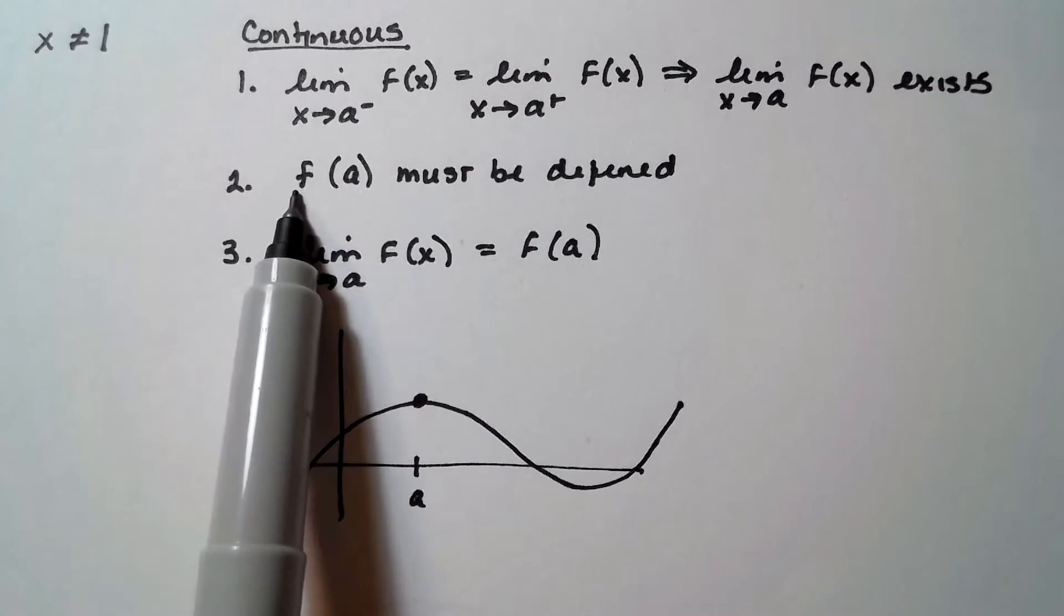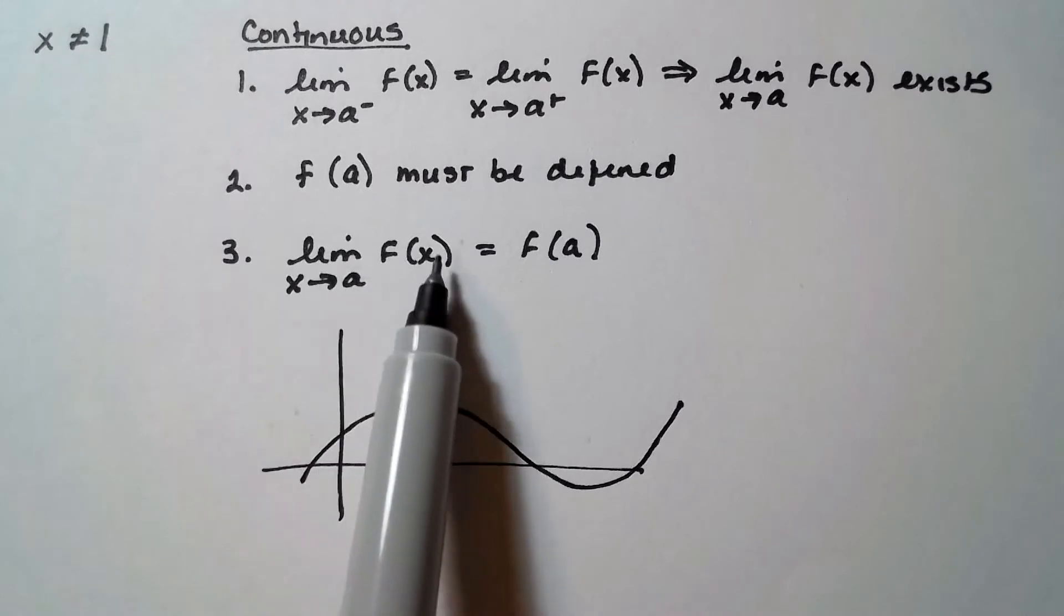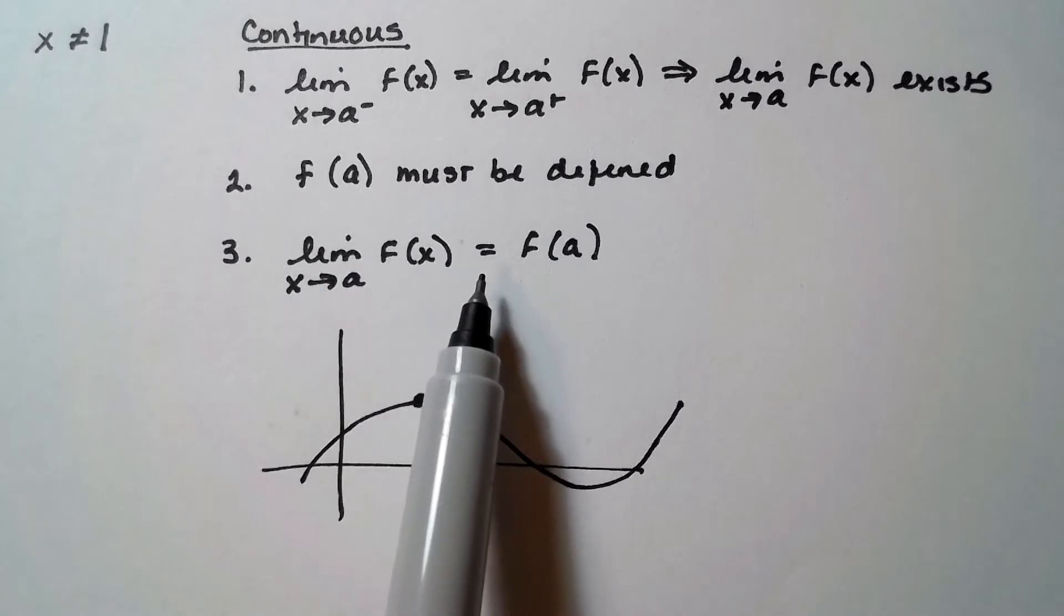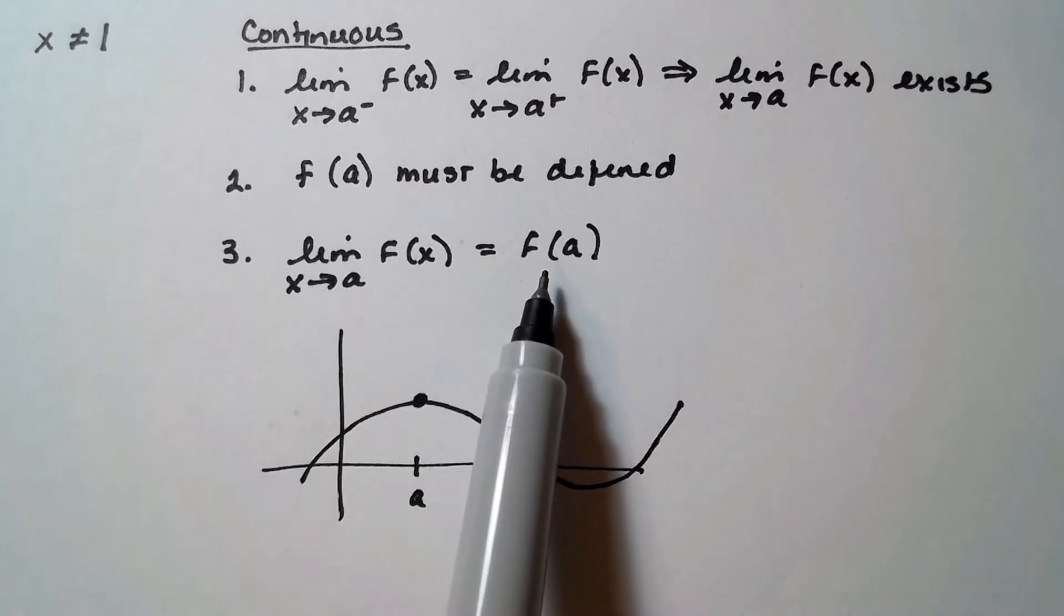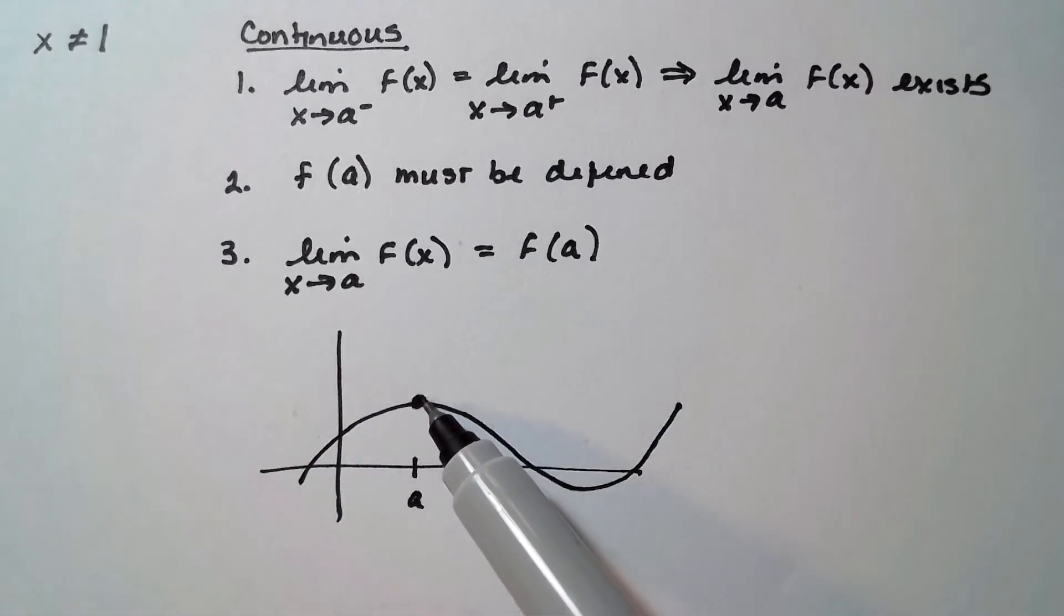The other criterion was that the function had to be defined at that point, and it is. And then the third one was that the limit of the function at that point has to equal the function defined at that point. So it's true. The limit is the same as f of A in this case here. So that's the definition of what it means for a function to be continuous.